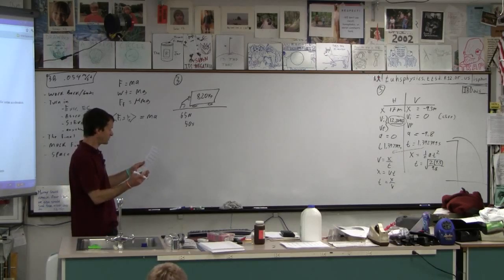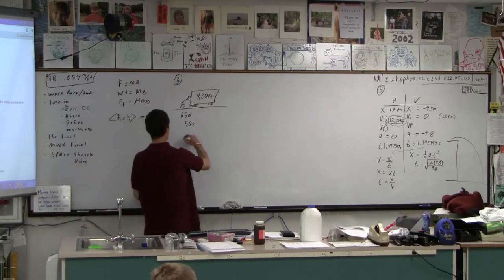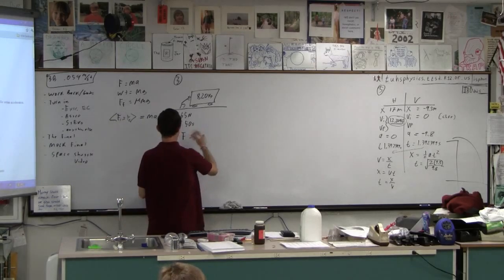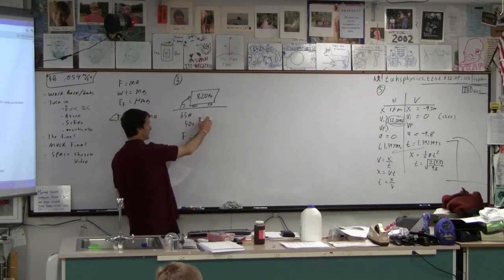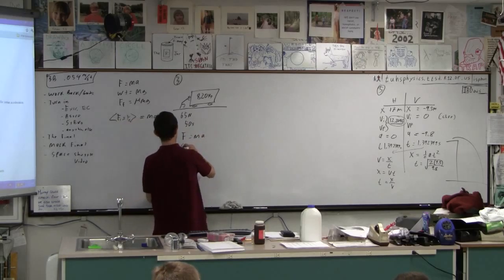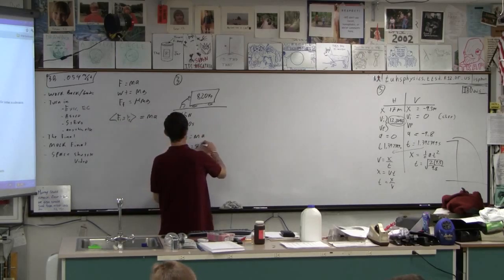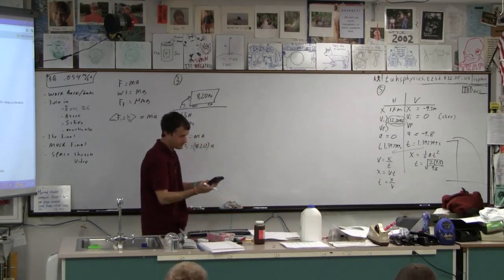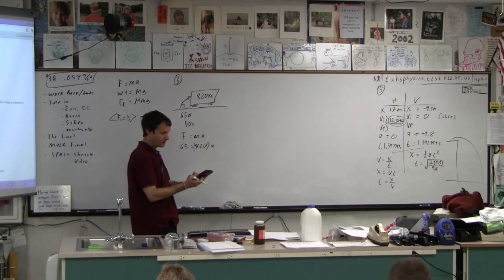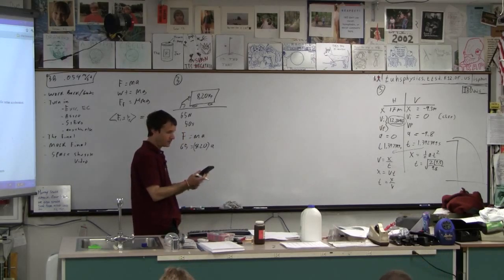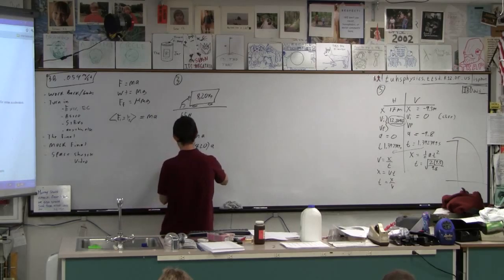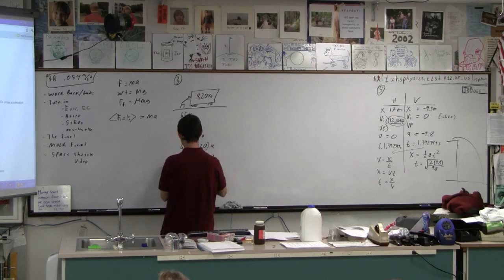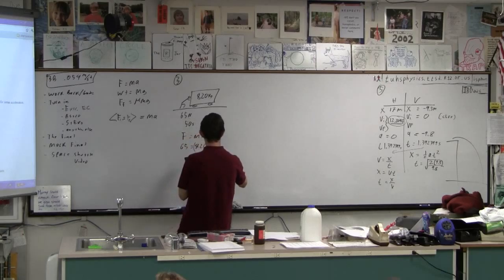Now if there isn't any friction force, then you can just simply use F equals MA, just as it is. And I don't have to go 65 minus the friction force because there isn't one. So the acceleration is 65 equals 820 times the acceleration, and then we can figure out the acceleration. So 65 divided by 820 gives a whopping acceleration of 0.079268. I'm going to store this in the variable A, meters per second squared.